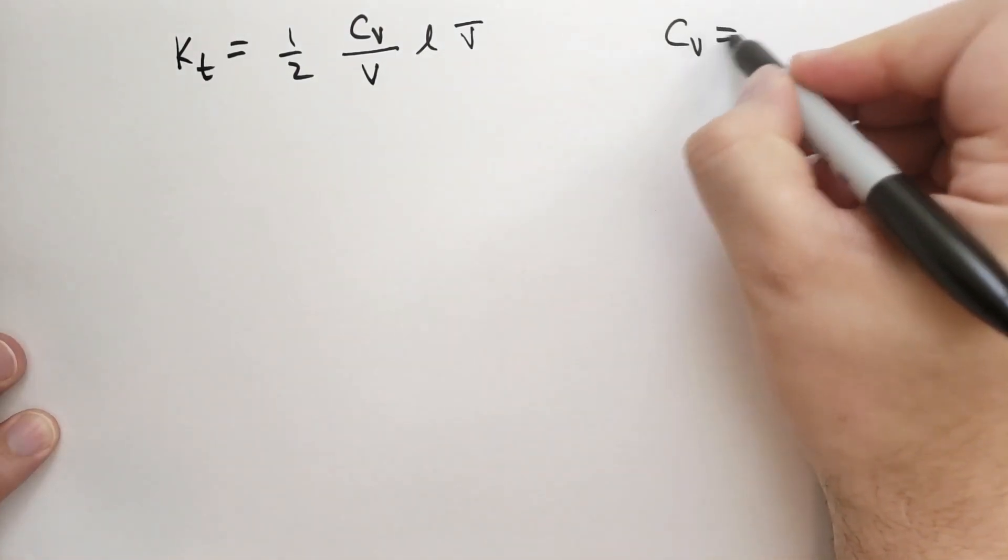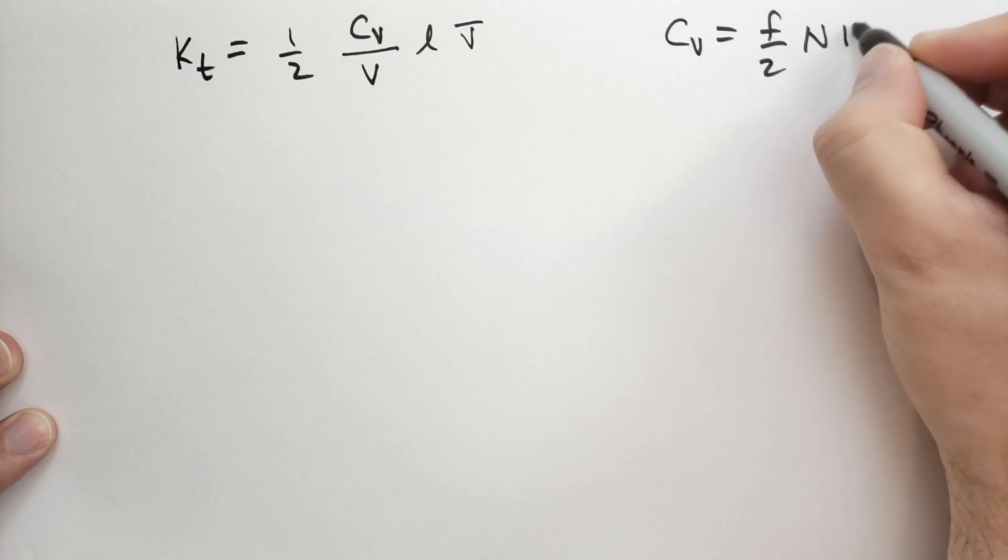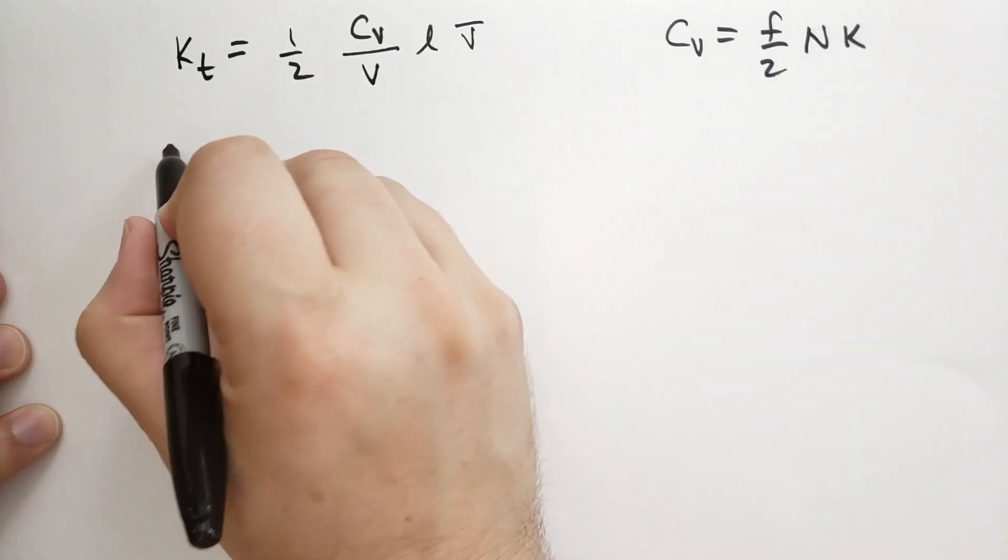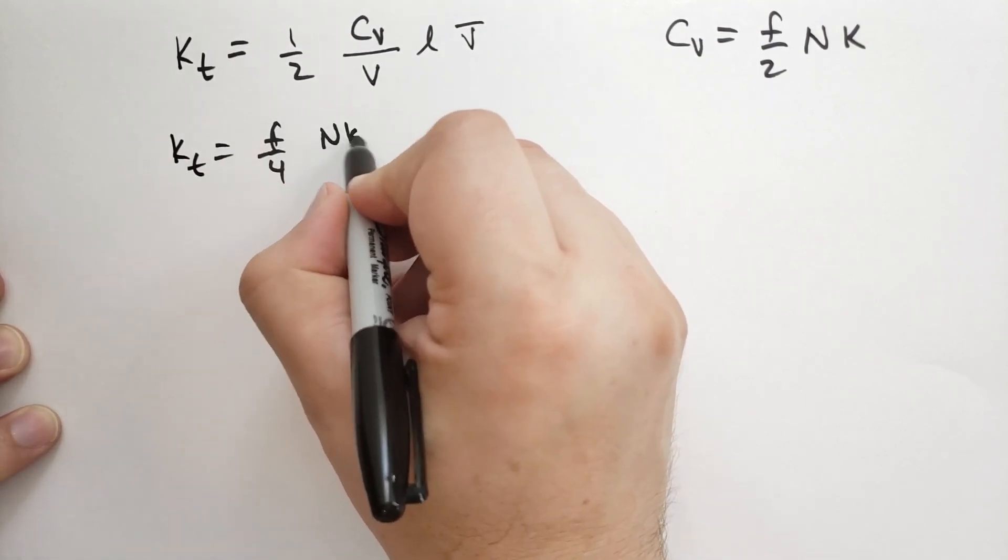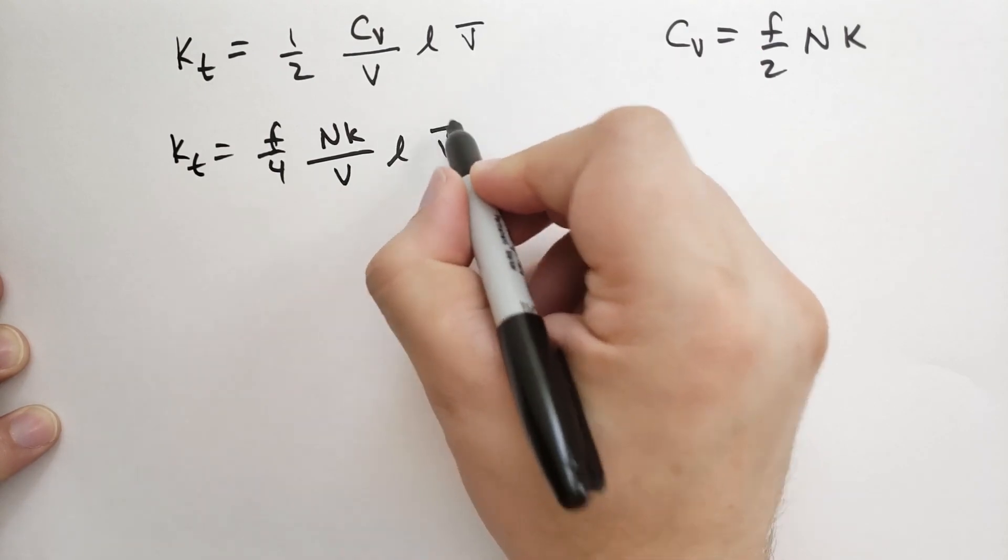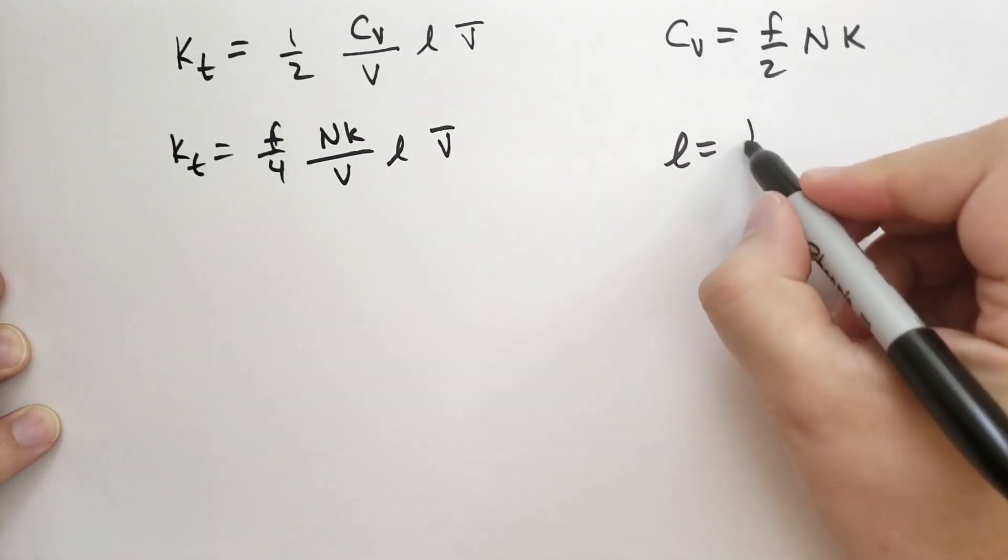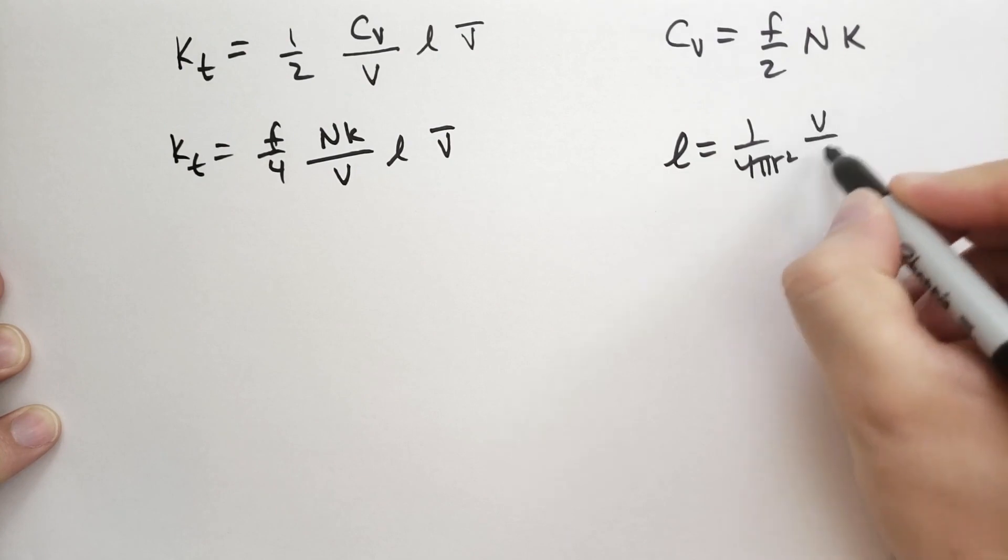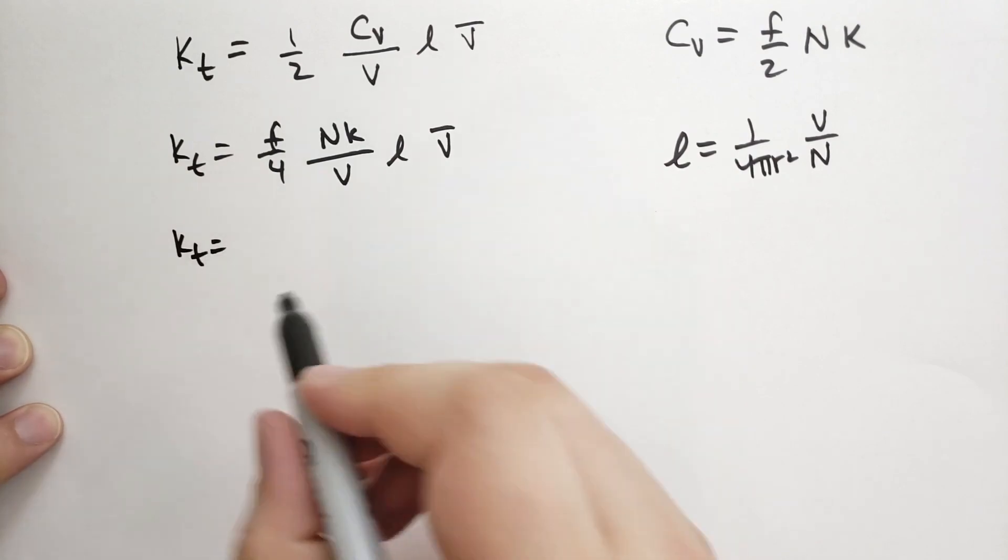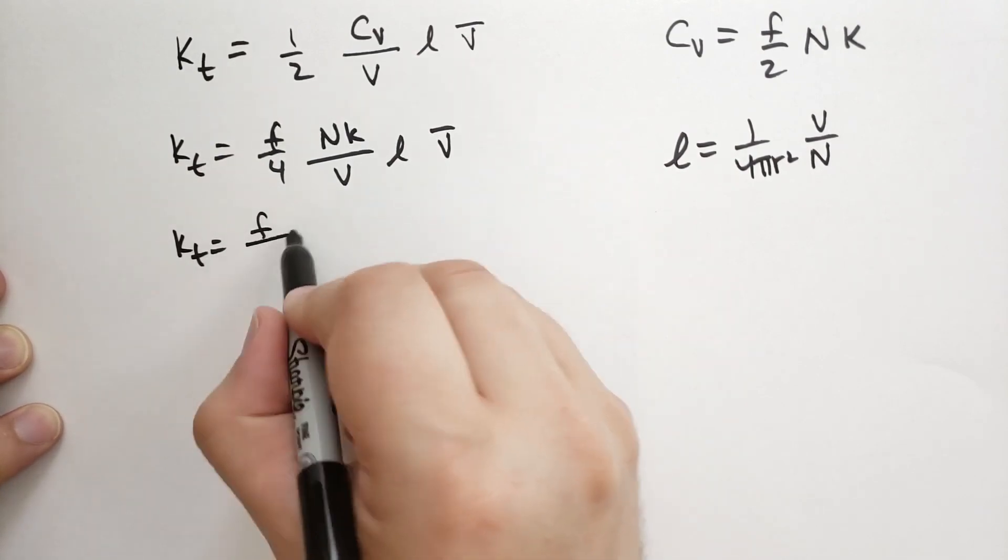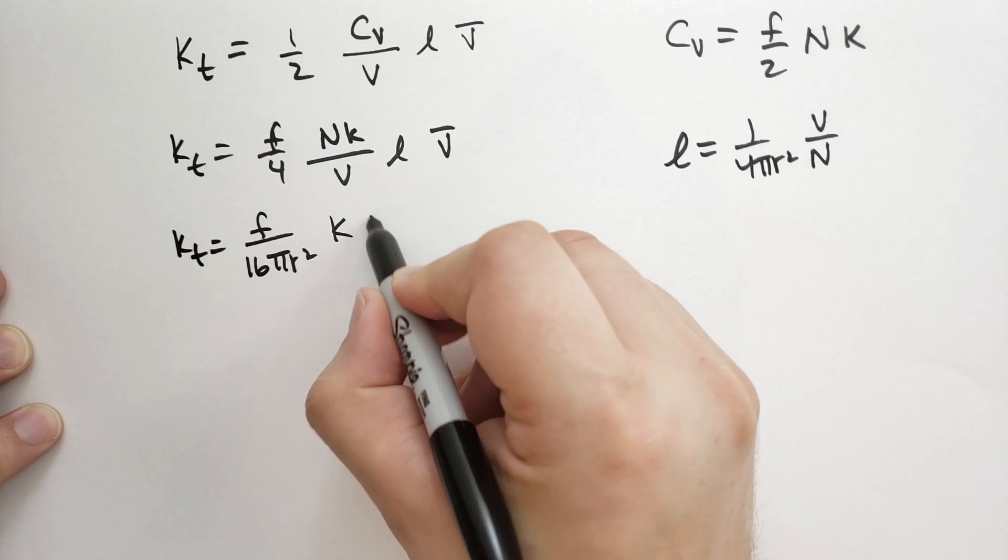All right. CV, recall that we calculated for an ideal gas, is equal to F over 2, N, the number of particles, times the Boltzmann's constant, K. And so we can substitute that in. So we get F over 4, N, K, all over V, L, times the average velocity. But earlier, we calculated the mean free path to be 1 over 4 pi R squared, V over N. And so if we plug that in, we get F over 16 pi R squared, N and the V cancel from L, so we get K, times the average velocity.